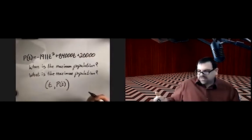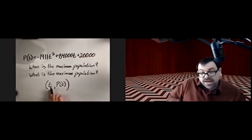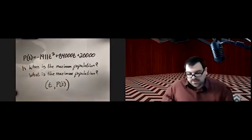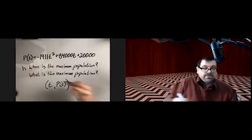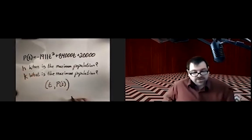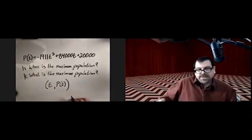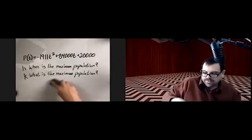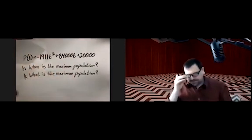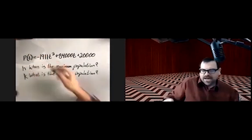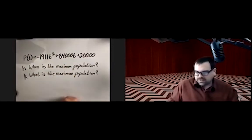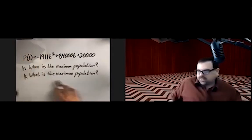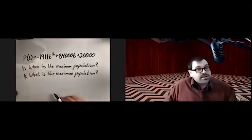When does the maximum happen? At the vertex. Specifically, the x-coordinate of the vertex will be our time. And then the output when we plug h in — that's k, the y-coordinate of the vertex. So each piece of the vertex will give us an answer to a different question. The input, the time, that's the 'when' of it all. And when we plug the time in, we get the actual population — the output.